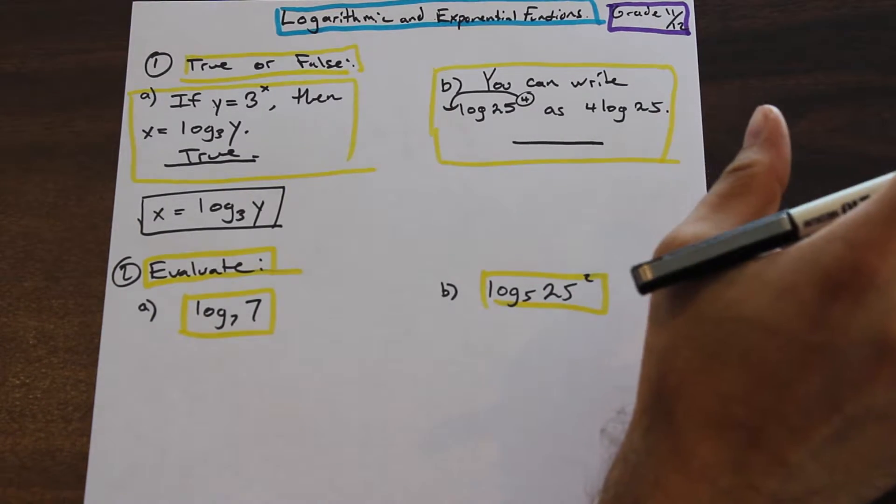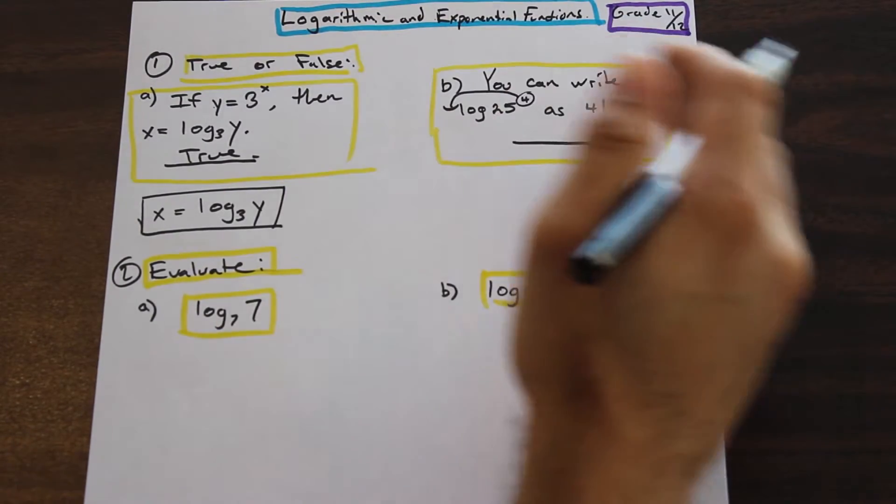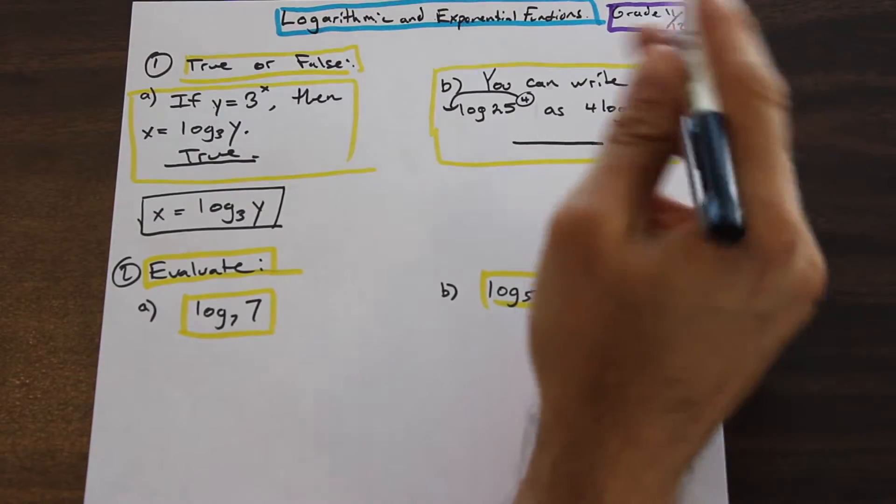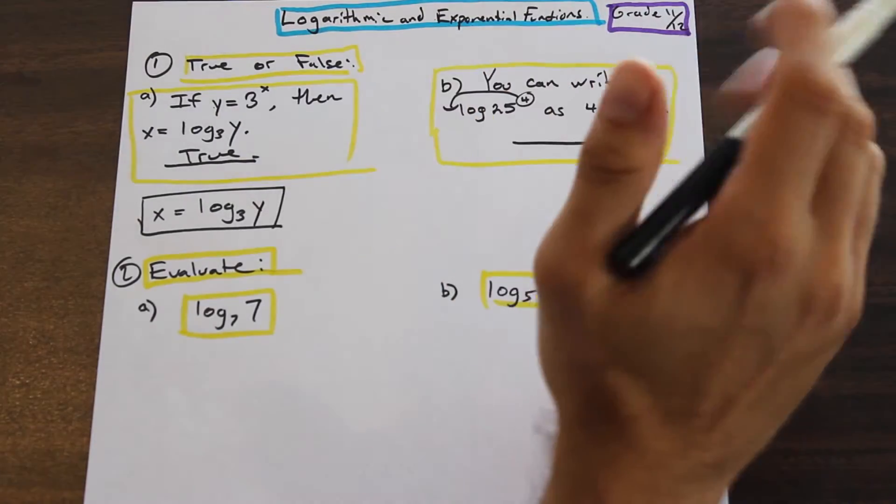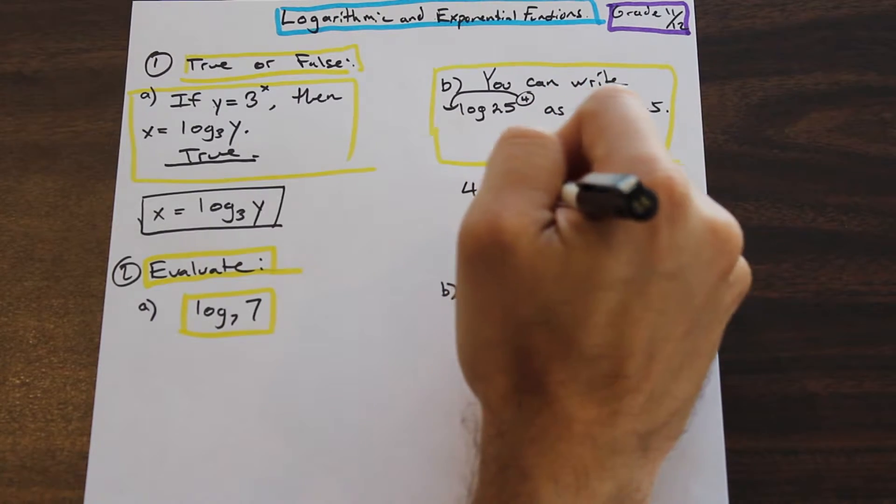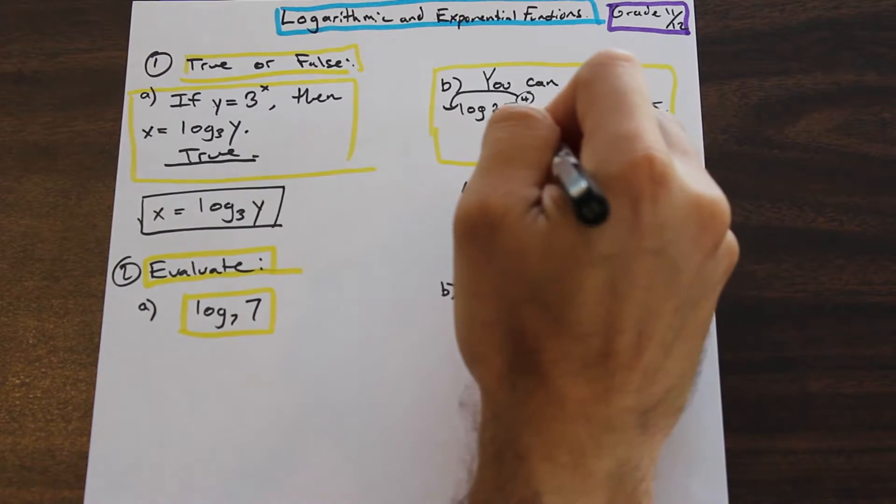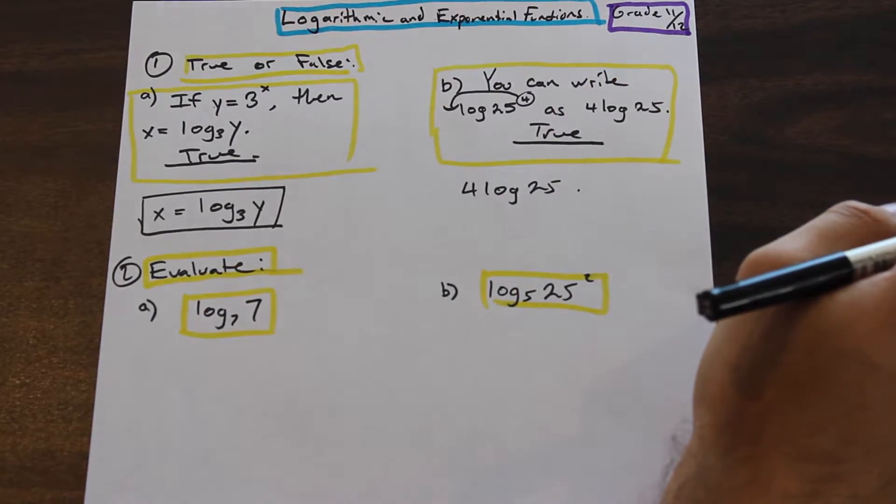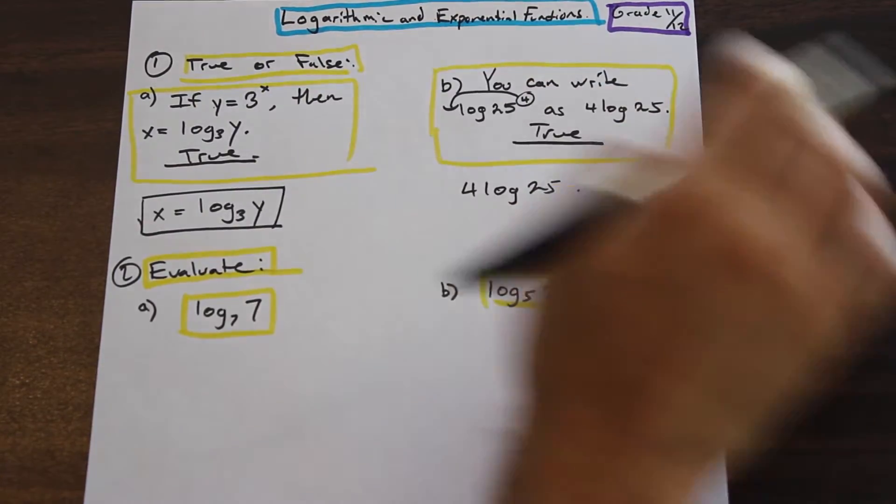That's where log functions really come in handy. So if you can log both sides of the equation, take the exponent and move it down, you can really start to simplify questions. So yeah, we can write that as four log 25. So that is also true. Cool. So we've done the first two true or false. They were both true.